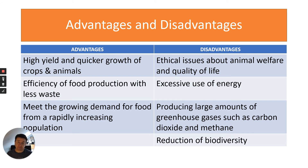Disadvantages include: ethical issues about animal welfare and quality of life; excessive use of energy — for example, temperature-controlled environments require electricity; producing large amounts of greenhouse gases such as carbon dioxide and methane; and affecting habitats and reducing biodiversity.